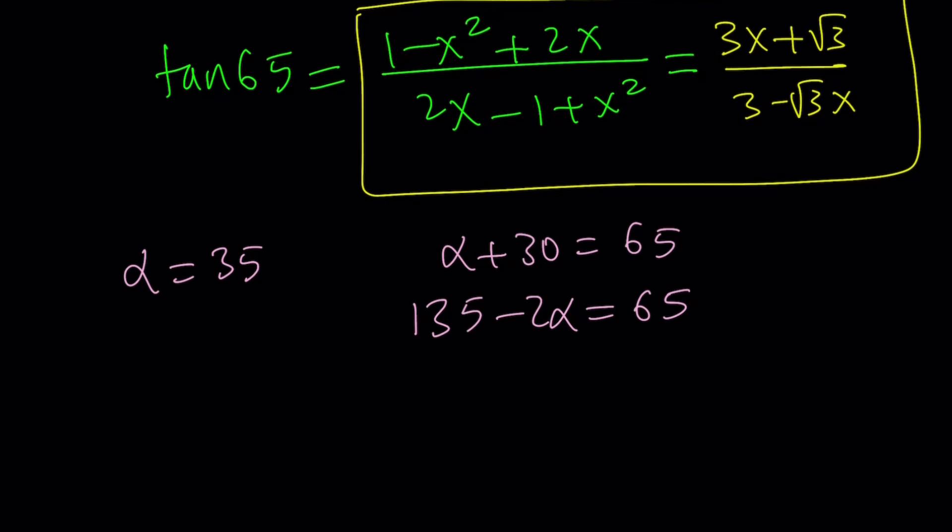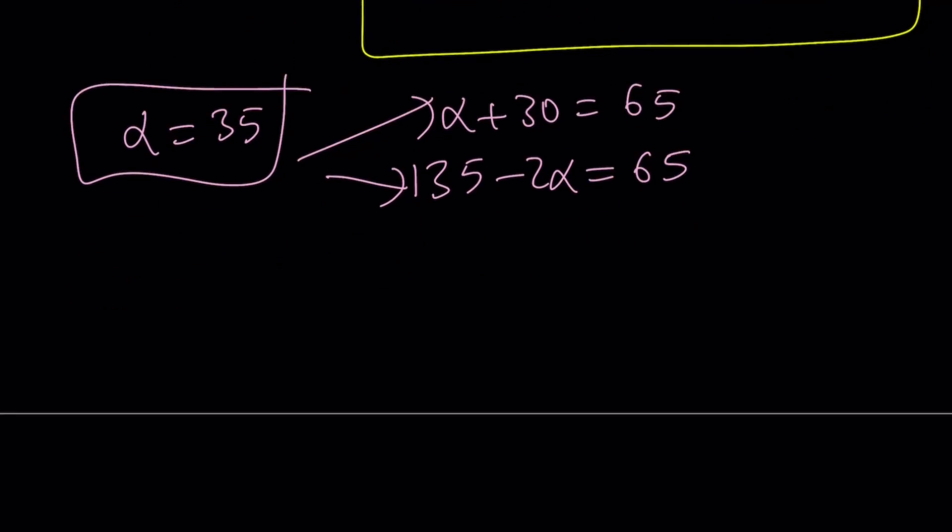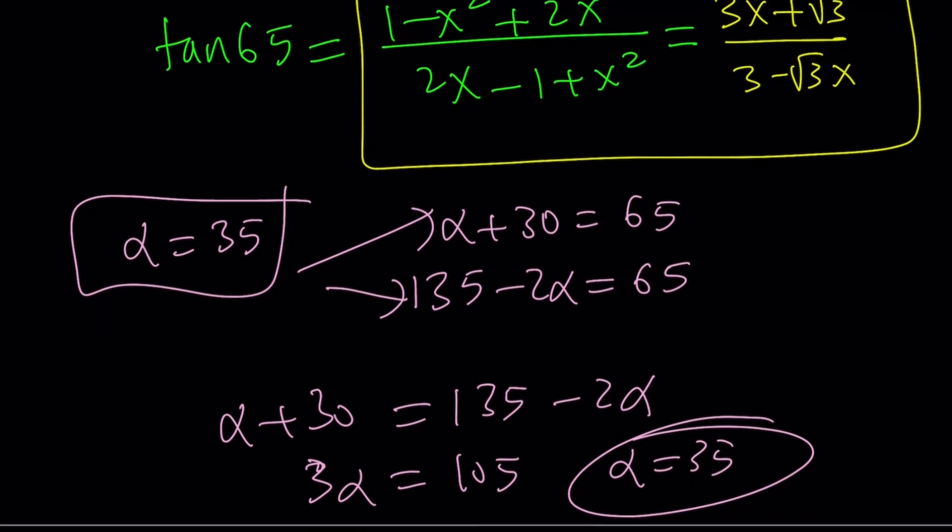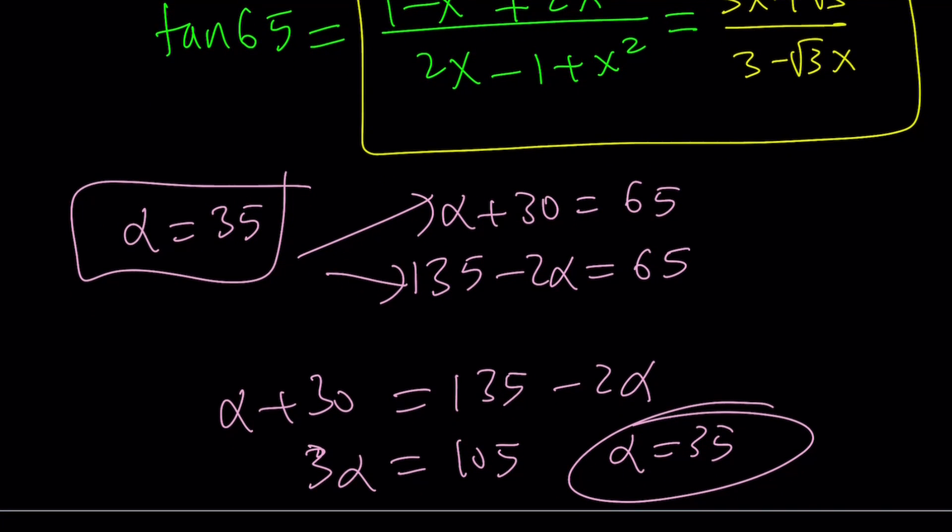So, for alpha equals 35, these give you the same value, because if you set them equal to each other and solve for alpha, you're going to get 3 alpha equals 105, and alpha equals 35. So, 35 degrees satisfies this equation. Therefore, both of these values are valid and good.